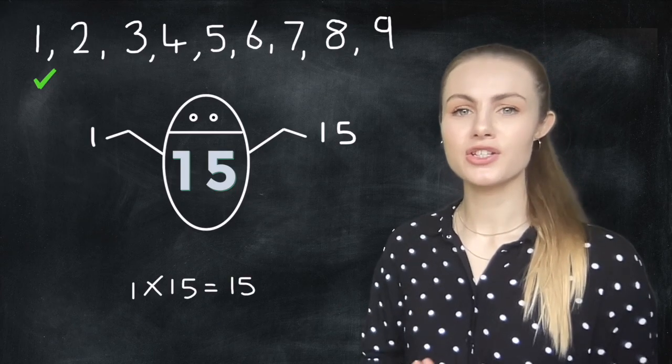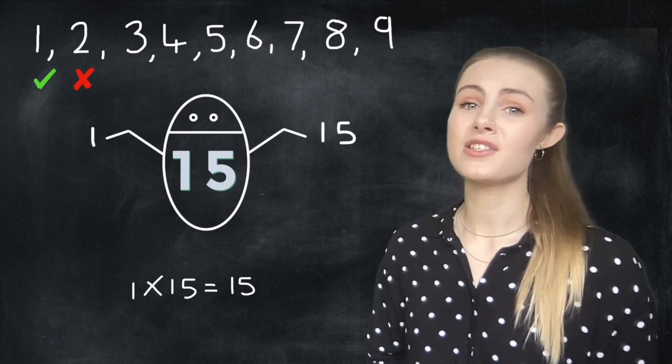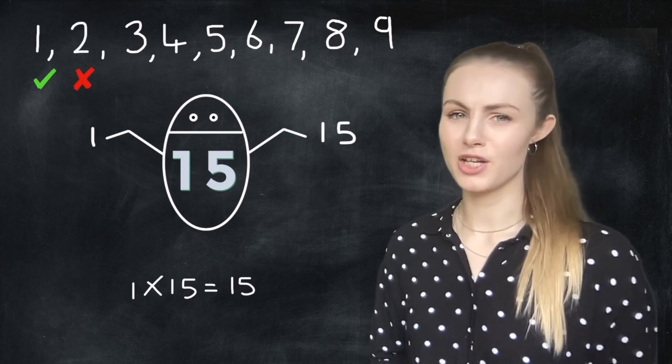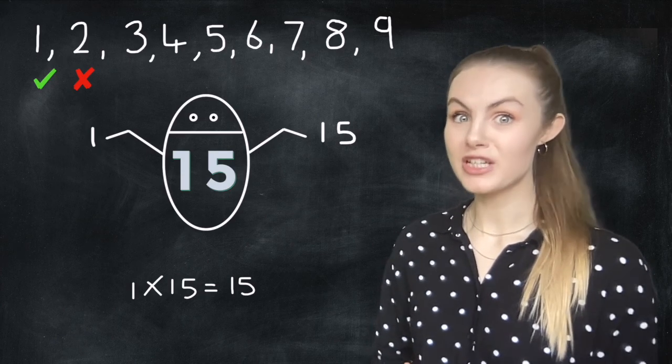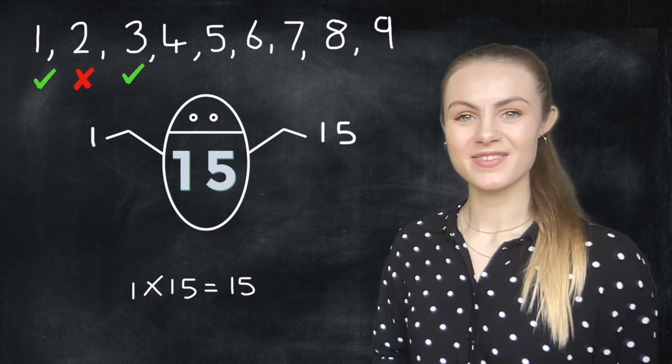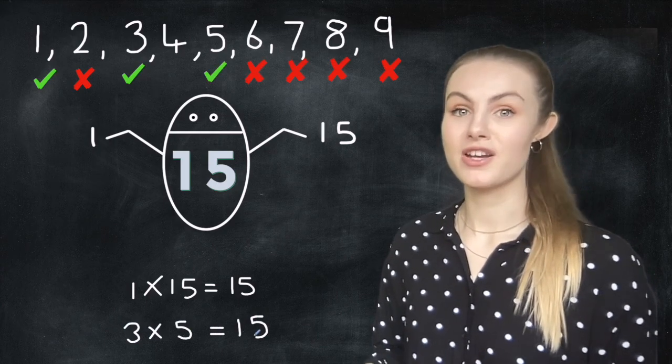So we'll start with 1 and itself because like every number, 1 and itself is always the first factor pair. Okay now let's look at 2. Is 2 a factor of 15? No it's not because 15 is an odd number so it can't be divisible by 2. So we'll move on to 3. Is 15 in the 3 times table? Yes it is. 3 times 5 equals 15. So we could put 3 and 5 as our next factor pair.